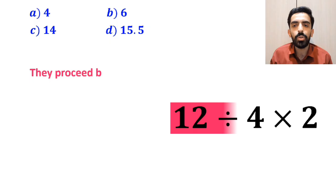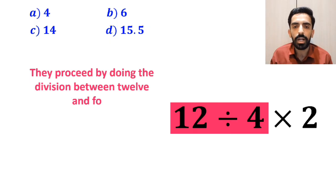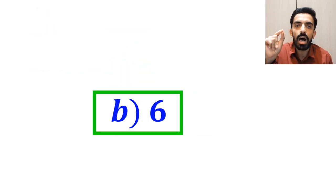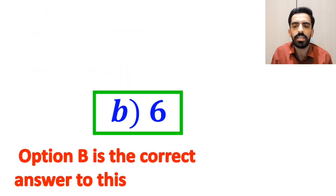Then, they proceed by doing the division between 12 and 4, which gives them 3 times 2. And finally, they multiply 3 by 2, which ends up with the answer 6. Then, without any hesitation, they quickly say that option B is the correct answer to this question. But, that's definitely wrong.